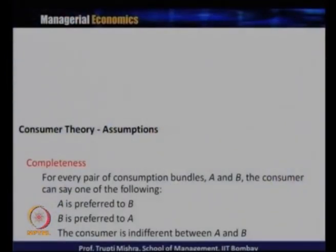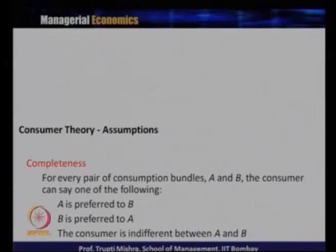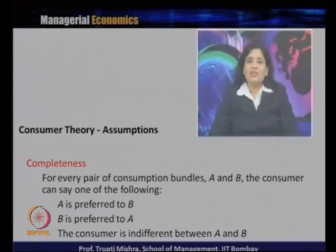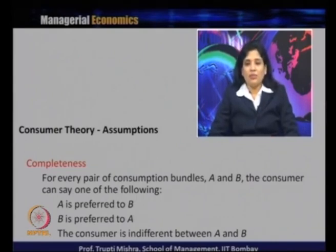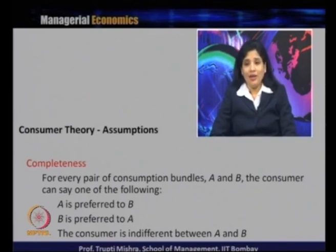There are a few assumptions in consumer theory. The first is completeness: for every pair of consumption bundles A and B, the consumer can say either A is preferred to B, B is preferred to A, or the consumer is indifferent between A and B — meaning both give the same level of satisfaction or usefulness after consumption.